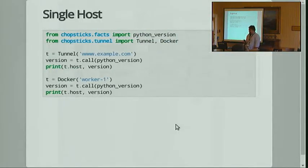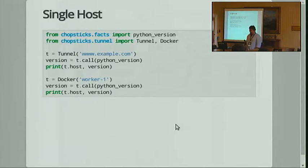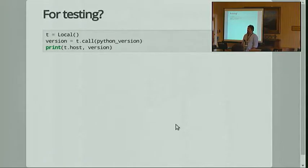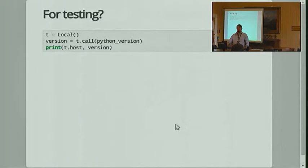The Docker object is the analog of a tunnel object which wraps an SSH connection. If you want to do that one host or Docker container at a time, it's the same API for groups and for tunnels. There's also a local which will run in a subprocess, so this is all using the same machinery. You can test against different Docker versions, you can test against the local machine — Chopsticks is probably more testable than some of the alternatives.